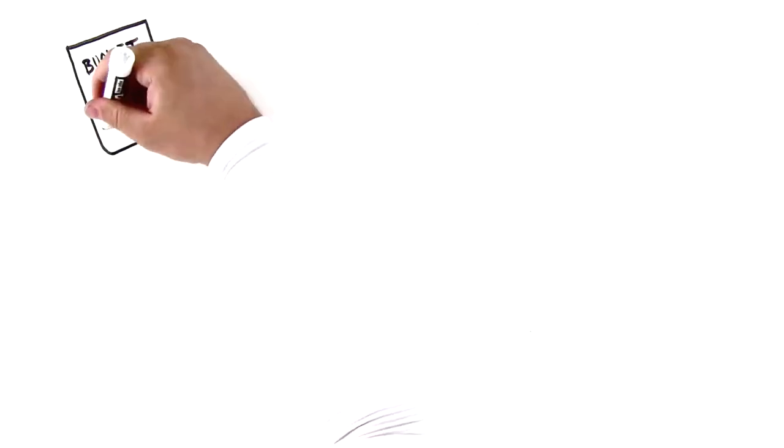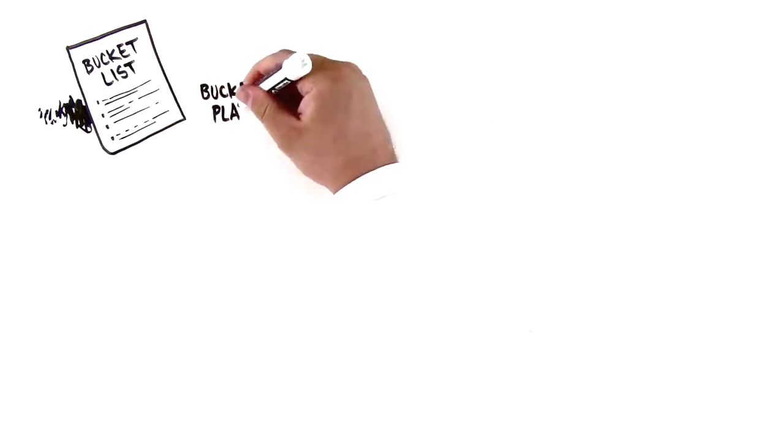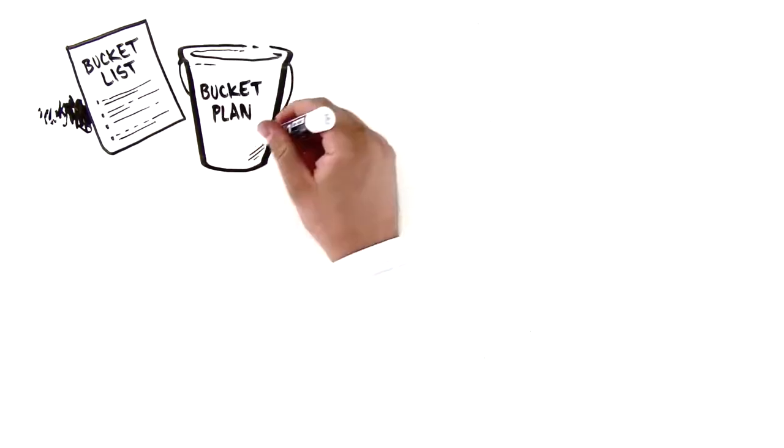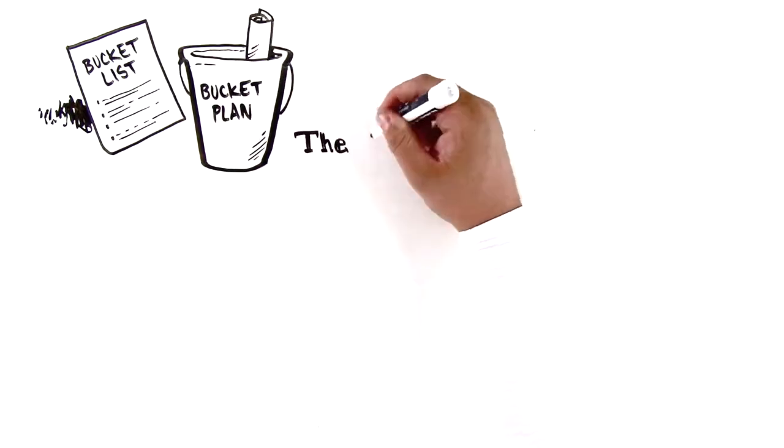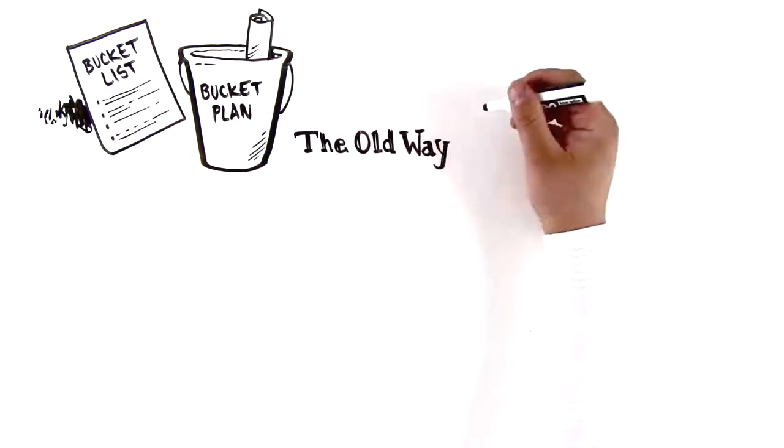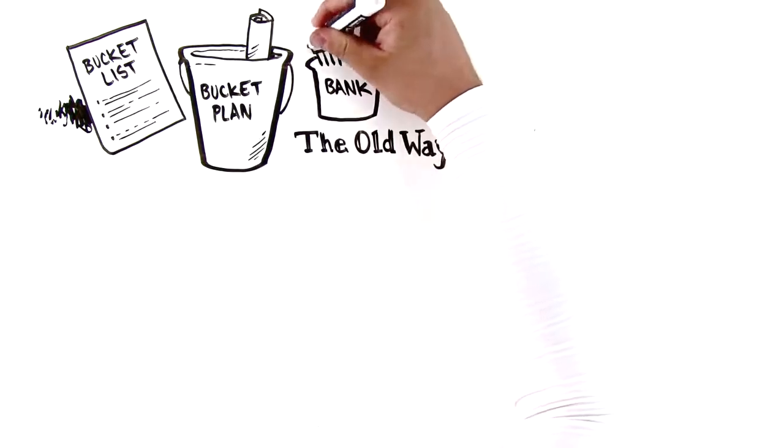Most people have heard of a bucket list, but have you ever heard of the bucket plan? The old way to plan for retirement was to keep a little bucket of money in the bank and a big bucket of money in savings and investments for the future.